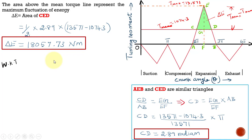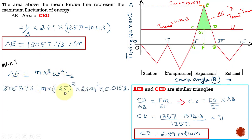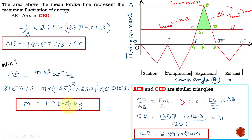We know that ΔE = Mk²ω²Cs. The ΔE value is known, K is given as the mean radius, ω has been calculated as 23.04 rad/s, and Cs = 0.0182. The only unknown is M. Therefore, the mass of the flywheel rim is 1196.2 kg. Thank you.